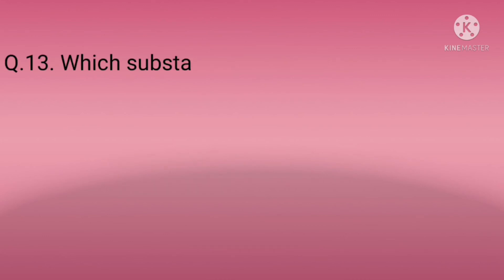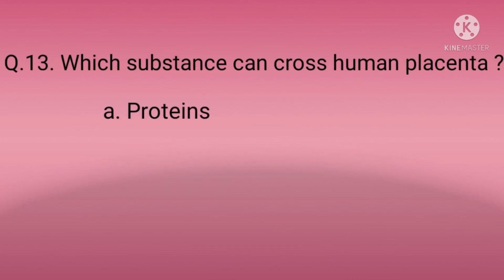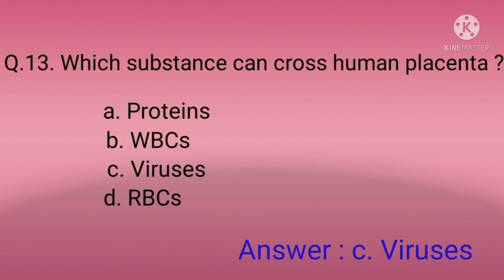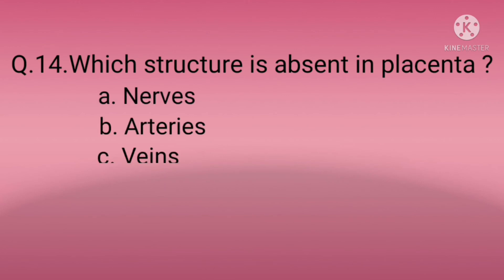Question thirteen: Which substance can cross the human placenta? Option A: Proteins, Option B: WBCs (white blood cells), Option C: Viruses, Option D: RBCs (red blood cells). The correct option is C — viruses.